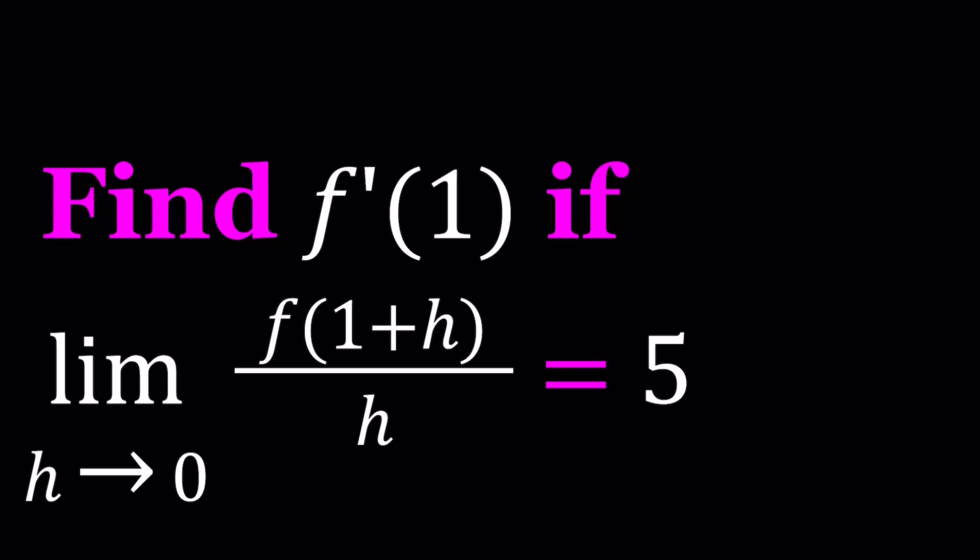Now, we are given that limit as h approaches 0 of f of 1 plus h divided by h is equal to 5. And we're going to evaluate f prime at 1 using this piece of information.